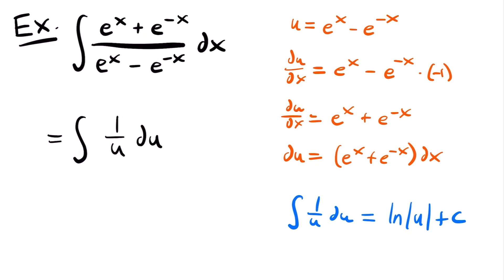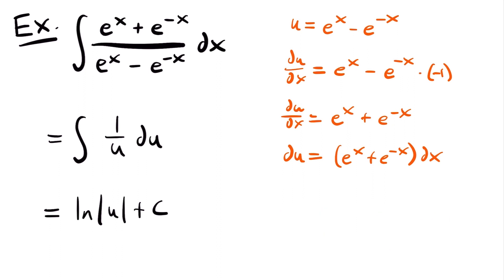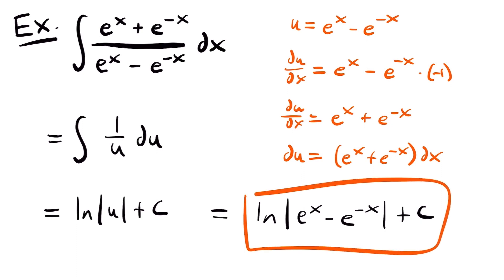This gives us the integral of 1 divided by u times du. This is why I set the denominator equal to u — it leads to this form which we know how to integrate using the log rule. The integral of 1 divided by u du equals the natural log of the absolute value of u plus c. So this equals the natural log of the absolute value of u plus c, and replacing u gives us the natural log of the absolute value of e to the power of x minus e to the power of negative x, plus c. That is the antiderivative and the solution to our integral. If you have any questions, feel free to leave those in the comments. I will see you next time.